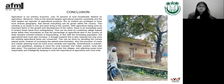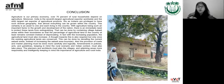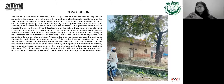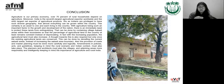To conclude, agriculture needs to be protected because it is a primary economy. Over 70% of rural households depend on agriculture, and India is the seventh largest net exporter of agricultural products. As Indians, we are privileged to have such diverse geography that almost everything can be grown within the country — this is certainly an asset. With agriculture being such an important factor in the growth and development of the nation, there is an immediate need to protect these lands from diminishing. This can be done by containing village abadi areas within boundaries so that the percentage of agricultural land at least remains constant instead of depreciating. With the increase in population, agricultural land must also increase — a thought towards that is required, but only once existing agricultural lands are conserved.